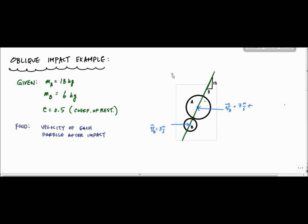Let's check this example out. Let's get to it. I got here an oblique impact example. Let's see here. I got this particle A and this particle B over here, and they are colliding.